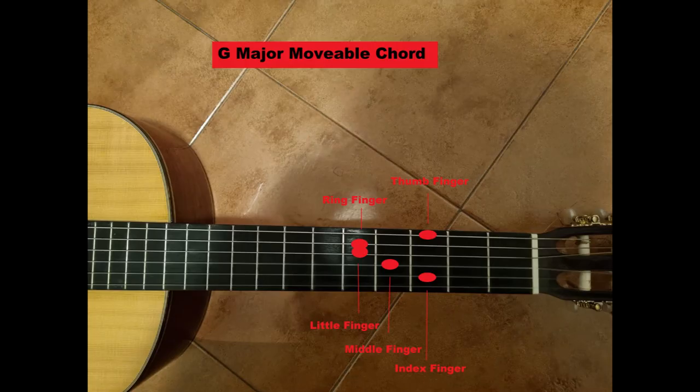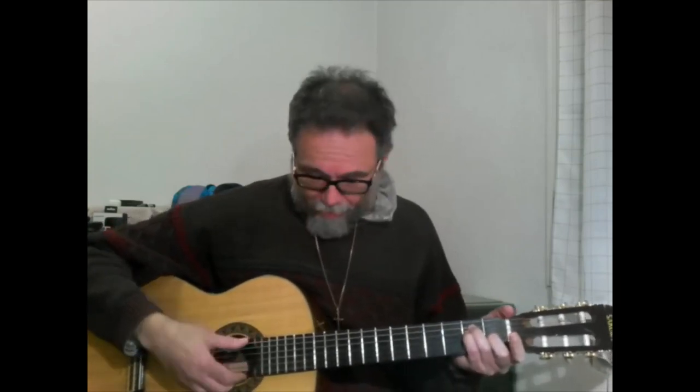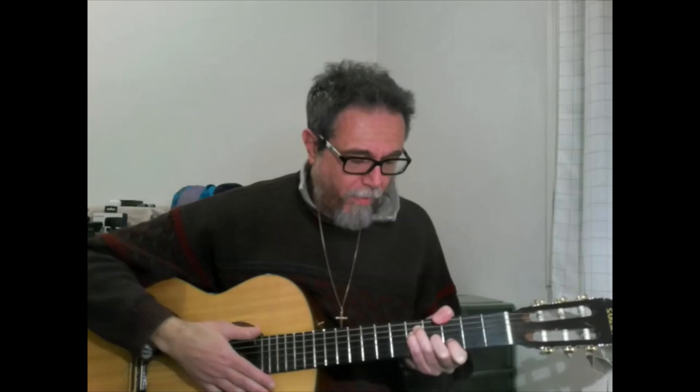You also have to mute string number one. It's called movable because you can play the chord along the fretboard: G major, G sharp major, A major, A flat major, G flat major movable chords. It's worth noting that this relates to the E major open chord — the G major movable chord uses that same shape.